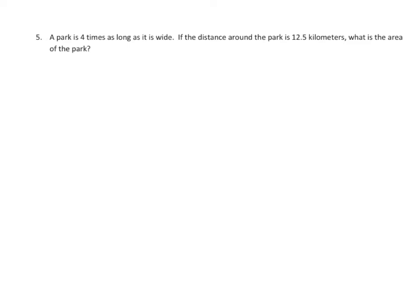Last one here. I'm going to make some diagrams once again. Let's read carefully. A park is four times as long as it is wide. If the distance around the park is 12.5 kilometers, what is the area of the park? We have this first information to look at. Let's talk about the width. We'll represent that width with one box. Now we'll talk about the length. It's four times as long, so we'll represent that with four boxes because it's four times as long.